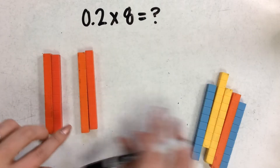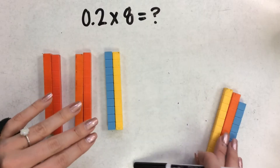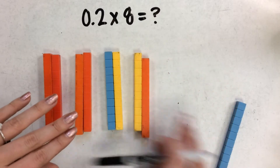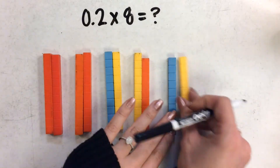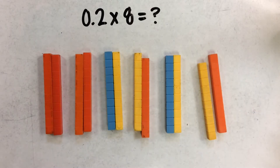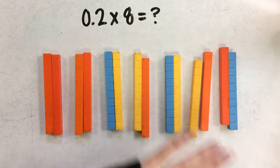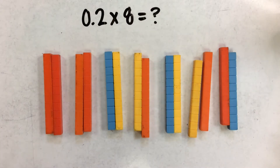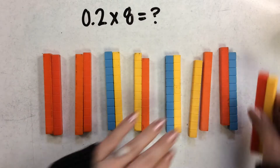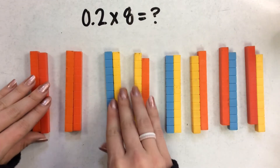So there's two tenths — there's three groups, four groups, five groups, six groups, seven groups, and one more group gives us those eight groups.